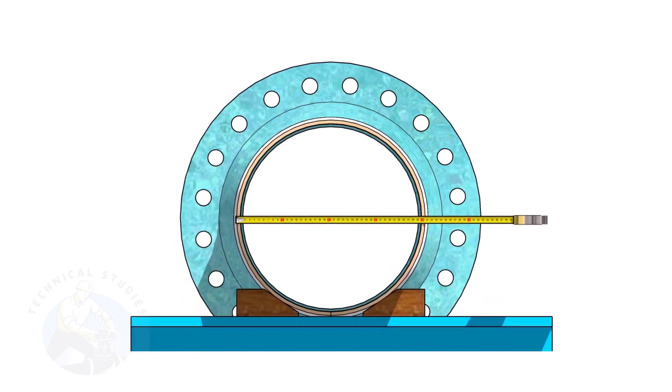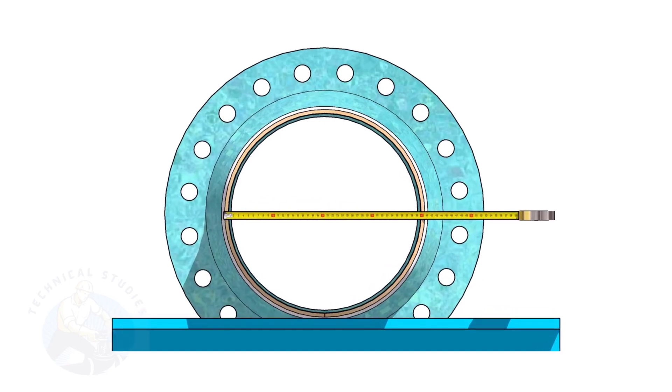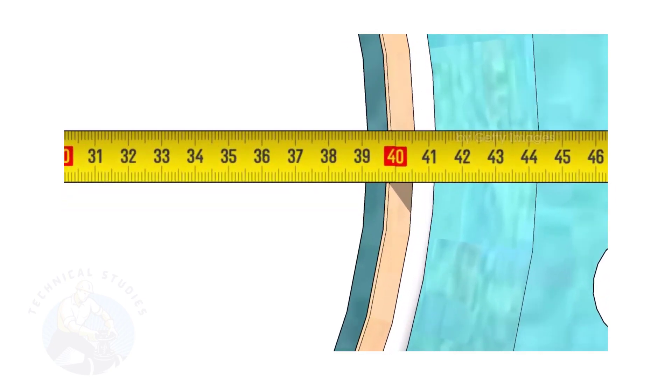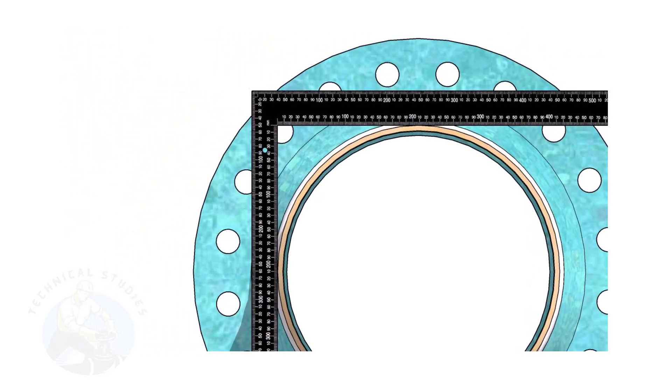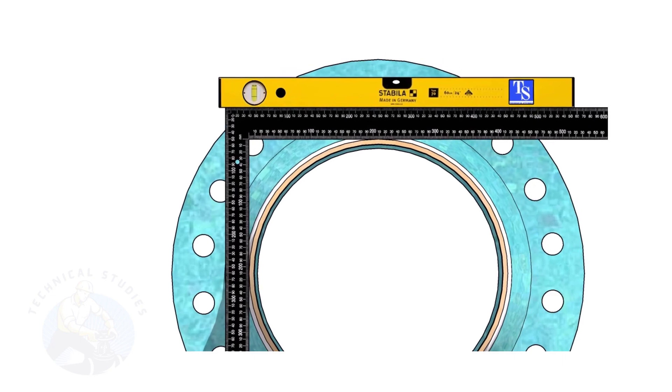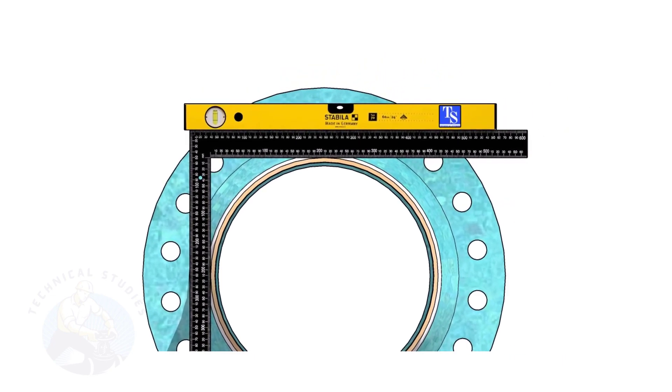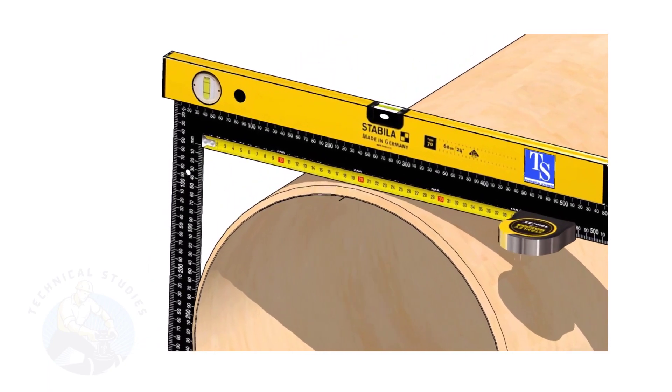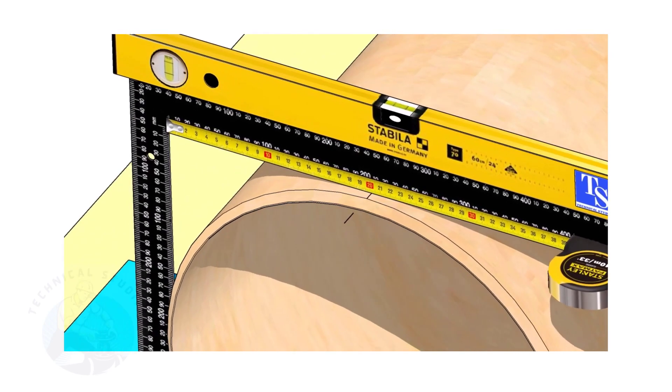Check the outer diameter of the pipe. Here, the diameter of the pipe is 406 millimeters. Hold a large right angle on the pipe as shown. Put a spirit level on the right angle and correct the top level. Mark half OD of the pipe on the top side. Here, the half OD is 203 millimeters.